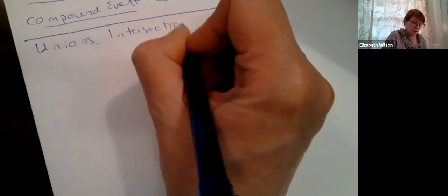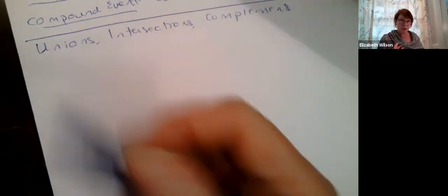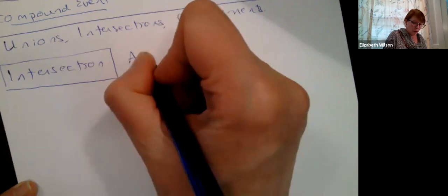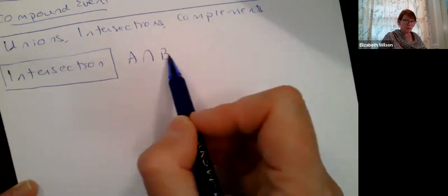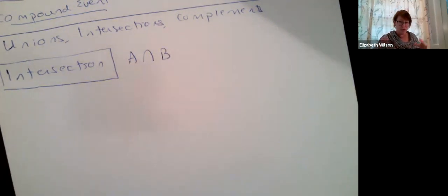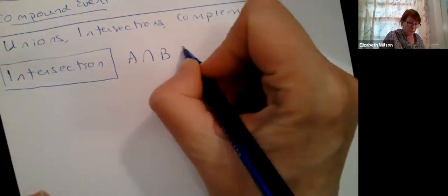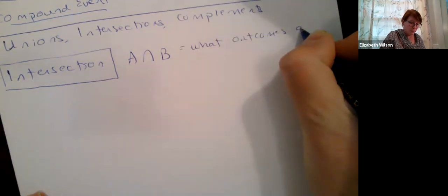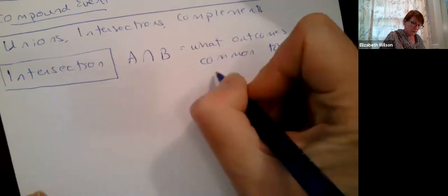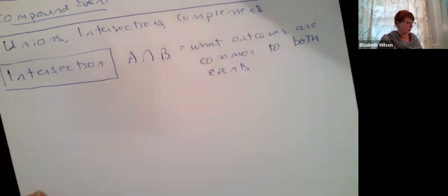Now let's talk about unions, intersections, and complements. The first is an intersection, written as A ∩ B — like an upside-down U. This means we have events A and B, possibly overlapping, within the same sample space. What we're looking for in an intersection is which outcomes are common to both events.